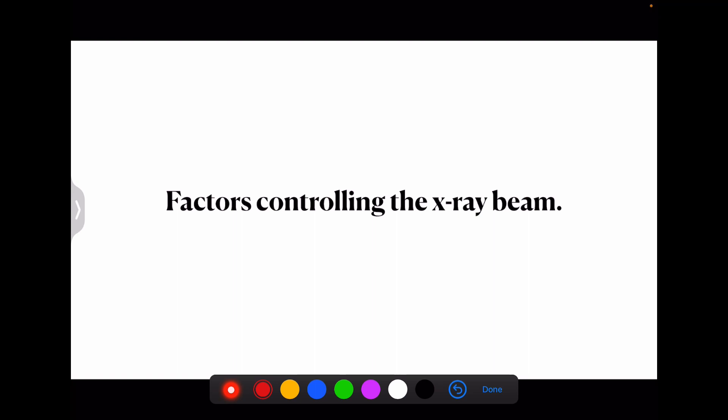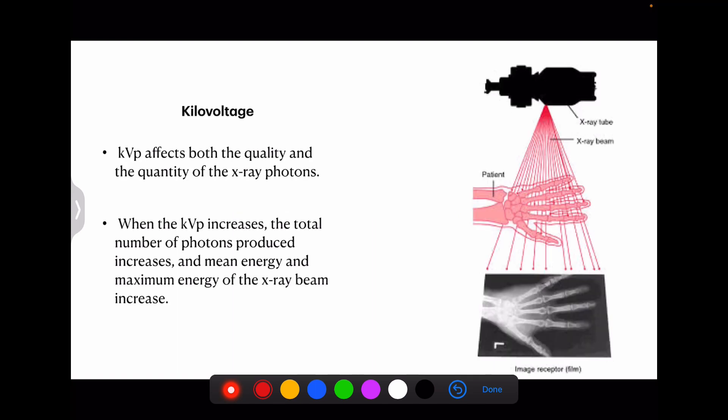Now coming to the factors which control this x-ray beam. There are various factors. Coming to the first factor - that is kilovoltage. This kilovoltage affects both the quantity and quality of x-ray photons. It is very important to remember it affects the quantity as well as the quality. So when kilovoltage increases, the total number of photons produced increases and the mean energy and maximum energy of the x-ray beam also increases.